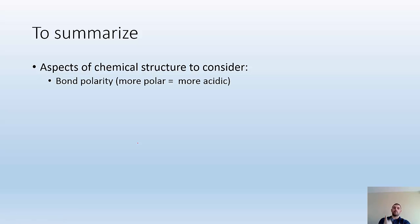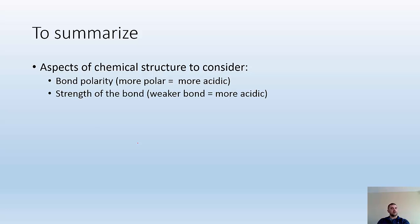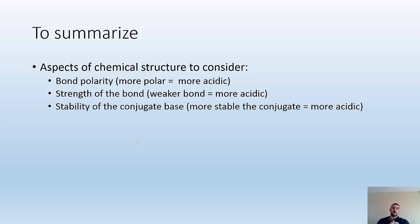To summarize, aspects of chemical structure to consider: bond polarity — the more polar the bond is, the more acidic it will be. Strength of the bond — the weaker the bond, the more acidic it's going to be because it's more likely to kick off that H+. And the stability of the conjugate base — the more stable the conjugate base is, the more acidic it's going to be. I hope you're starting to see chemistry the way I see it and it's all making sense. If not, see me in class and bring some questions.